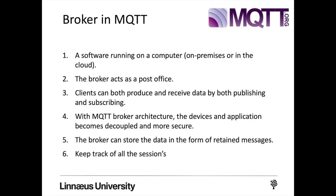MQTT does not use the address of the intended recipient but uses the subject line called a topic, and anyone who wants a copy of that message subscribes to that topic. Multiple clients can receive messages from a single broker — that is a one-to-many capability. Similarly, multiple publishers can publish topics to a single broker. Each client can both produce and receive data by publishing and subscribing, making it essentially a many-to-many communication.